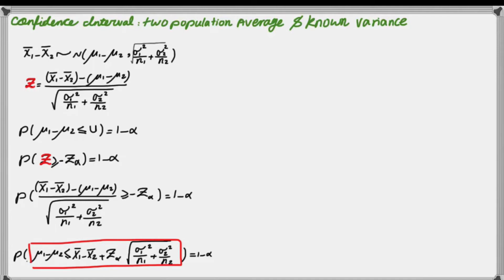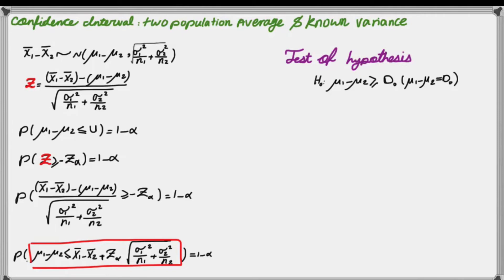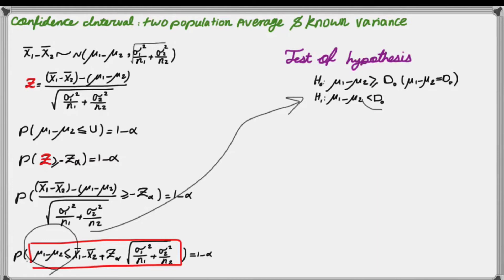Now I can set up hypothesis testing using the three-step method. First, I set up a hypothesis: mu1 minus mu2 greater than or equal to some difference d0. Remember, when you set up your hypothesis, the sign of your confidence interval should be consistent with the sign of your alternative test. For example, if the alternative is mu1 minus mu2 less than d0, then you have to set up a confidence interval that is mu1 minus mu2 less than or equal to something — basically you're looking for an upper bound. The sign of the confidence interval should match your alternative test.